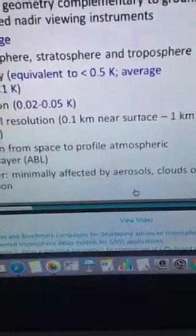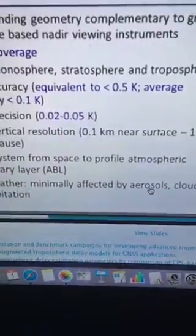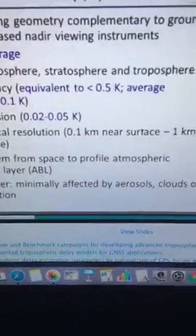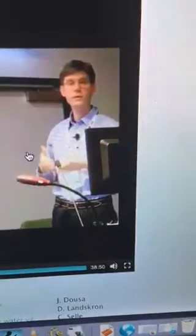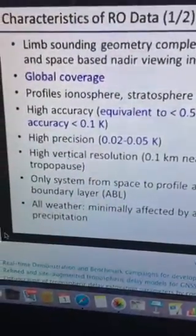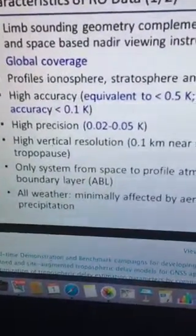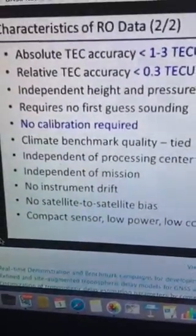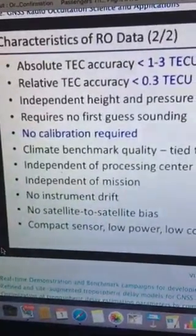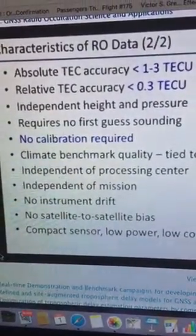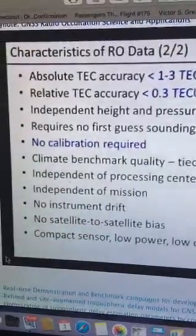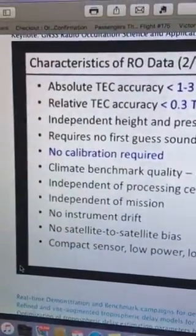Just like GNSS navigation, the technique works in any kind of weather. There are no significant effects from clouds or rain or snow, those kinds of things. In terms of ionosphere, typically you get absolute TEC at the level of one to three TEC units. Relative TEC is a little bit better. There's no calibration that's needed. That's a very nice thing.